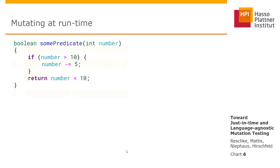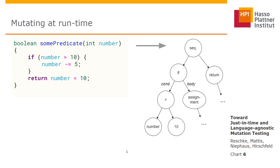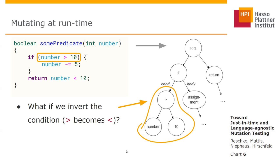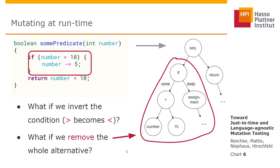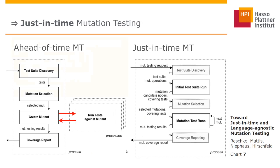What is just-in-time mutation testing really about? Instead of ahead-of-time, we perform mutations just-in-time, at runtime. This code can be represented as the AST. You might want to invert the greater-than at the beginning of the function — you could catch the node once it's run by the interpreter and decide to do something else. For example, performing the mutation: instead of using a greater-than, use a less-than. The same is possible if you want to remove the alternative — catch the if-node in the AST and skip execution of child nodes.